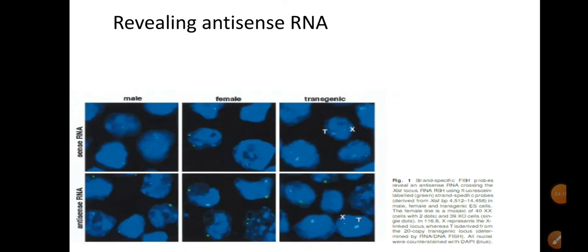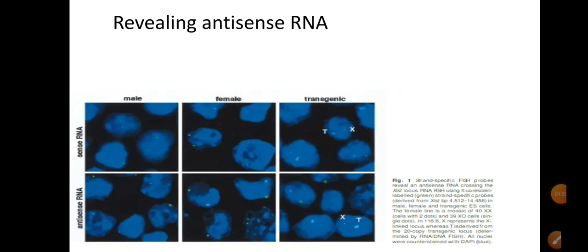RISH requires a highly sterile environment because RNA can adopt secondary structures and can be easily degraded. Because of these facts, RISH requires extra care with the environment. With this, we are done with the third question of the PhD mock interview test series. Keep studying — if you have any doubts, comment below, message me, or DM me on Instagram or email me.